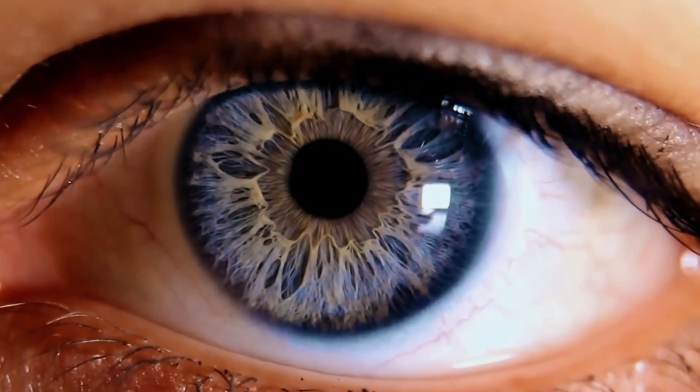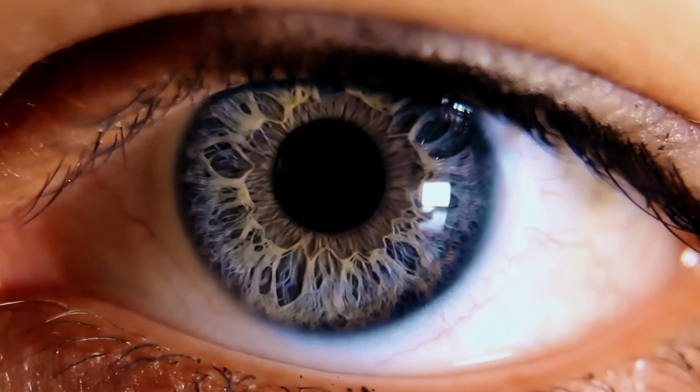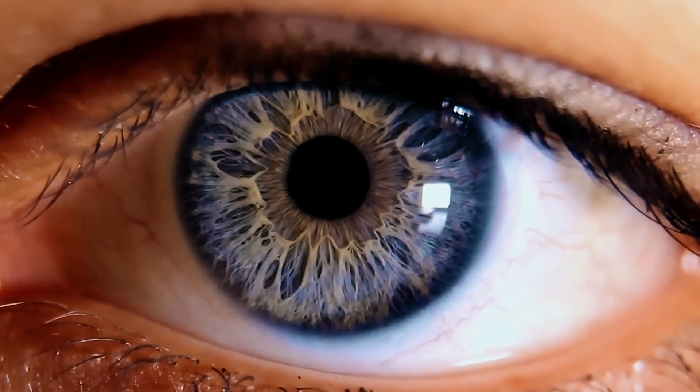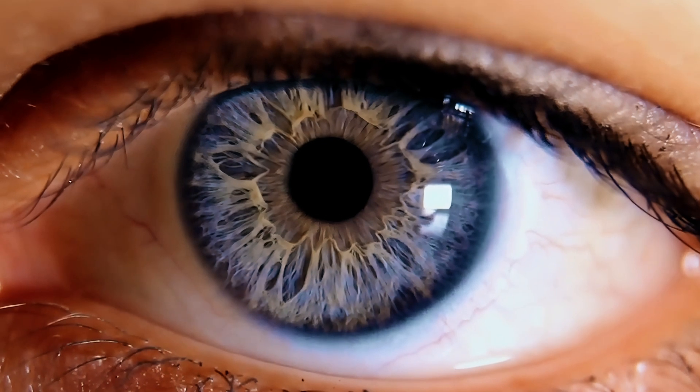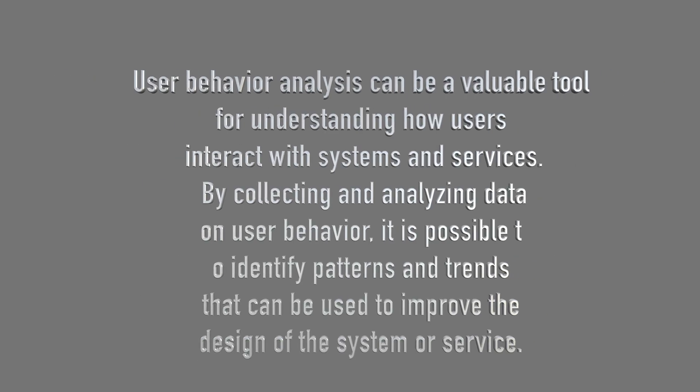Another way to protect data is user behavior analysis — the process of understanding how users interact with a system. You can set up rules like: if a user opens this file and does this, they are not allowed to open that file. Everything you do on your work computer is likely being monitored. User behavior analysis tracks actions, identifies patterns and trends. One common method is log files, which track every action taken by a user within a system.